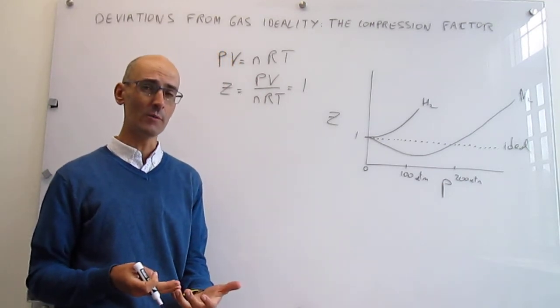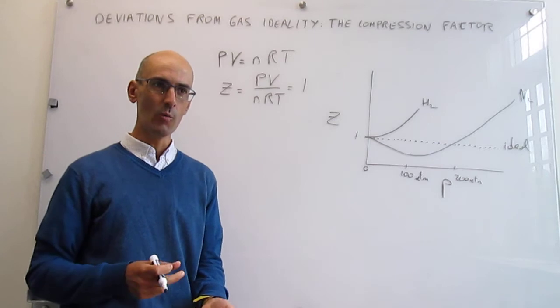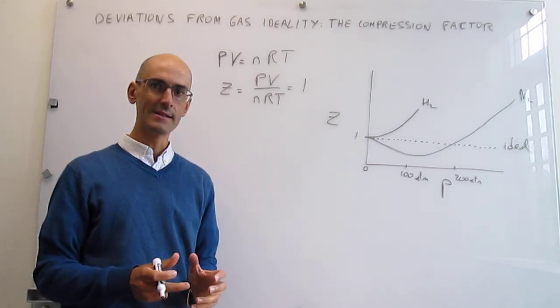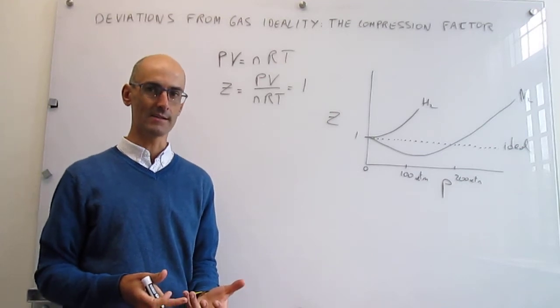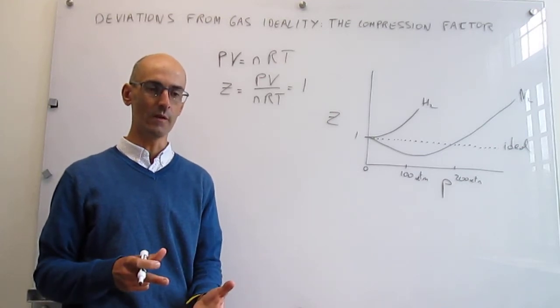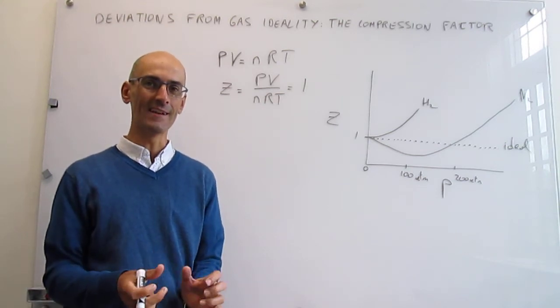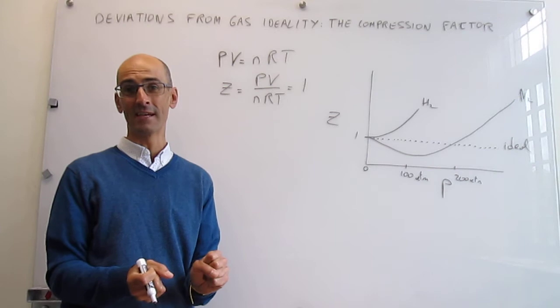If you have a compression factor less than 1, that means when you're applying pressure to that gas, the gas is easier to compress than an ideal gas. The only way a gas can be easier to compress than ideal gas is if the gas is experiencing attractions.